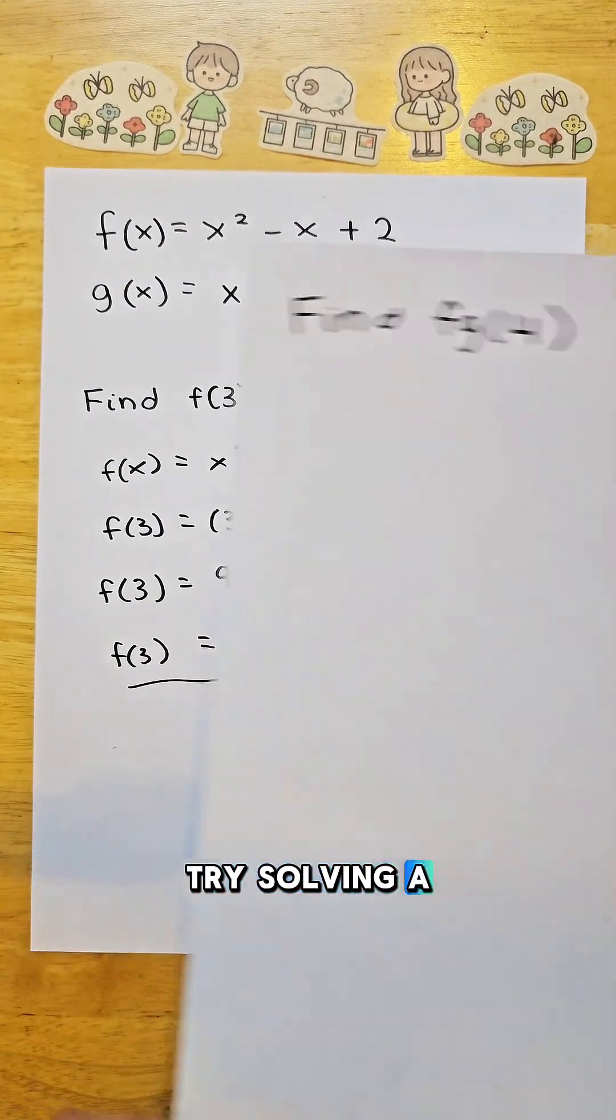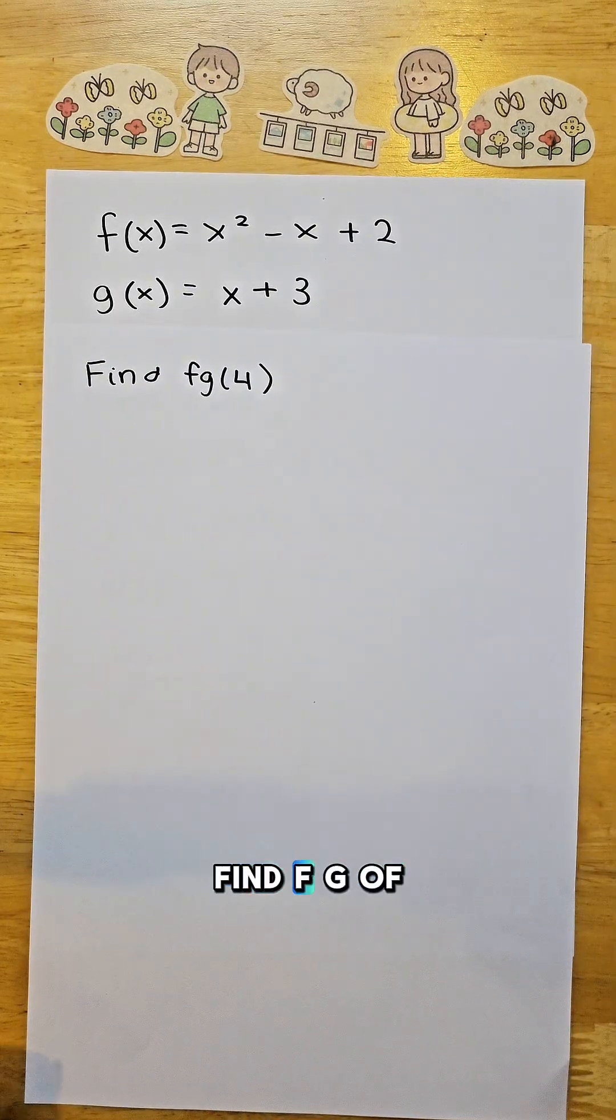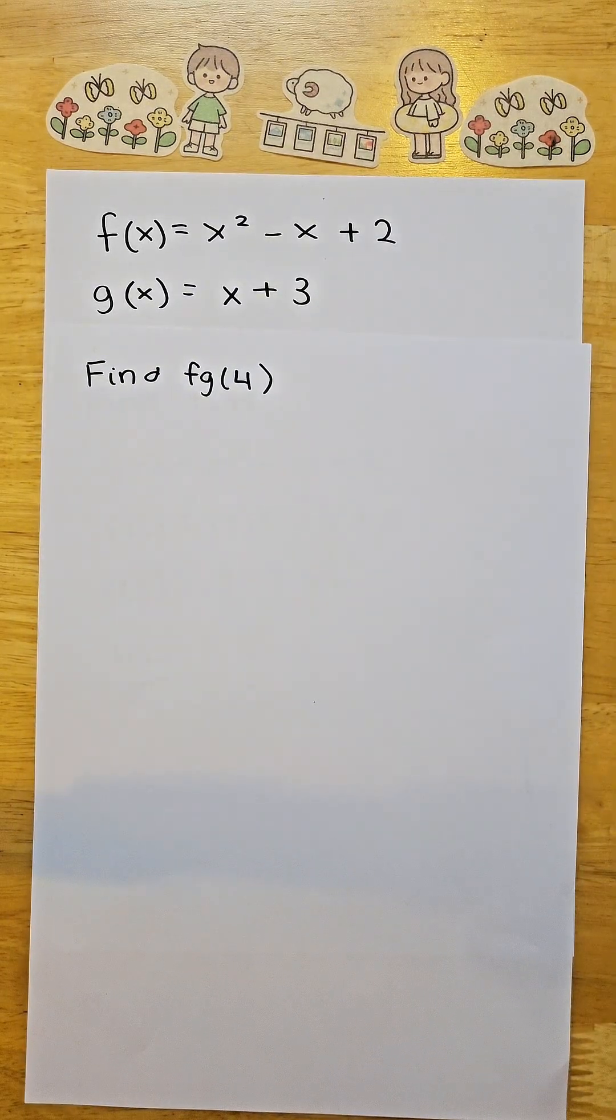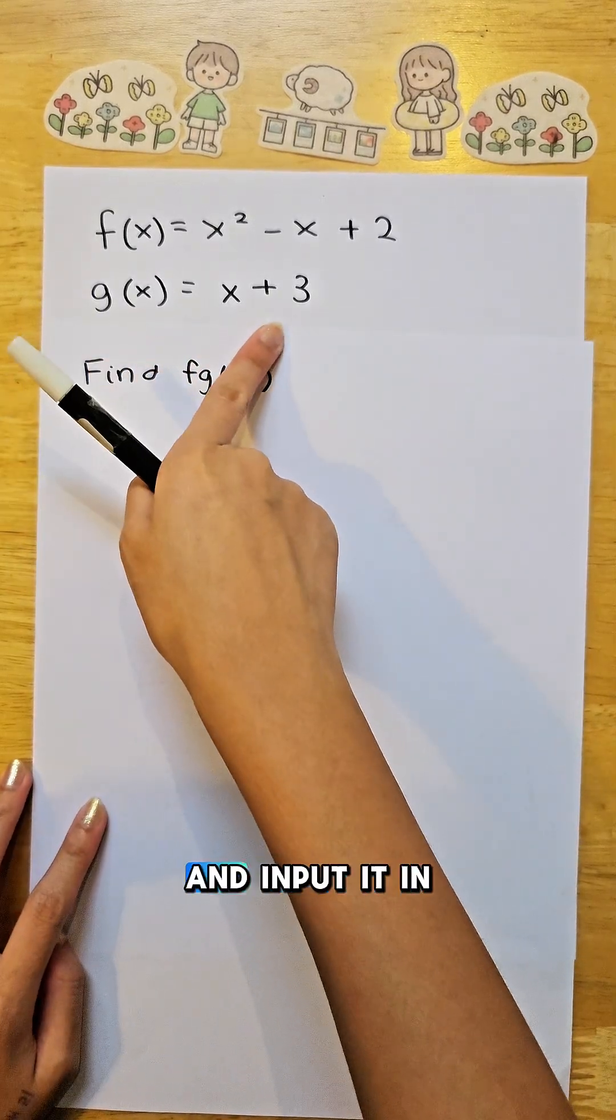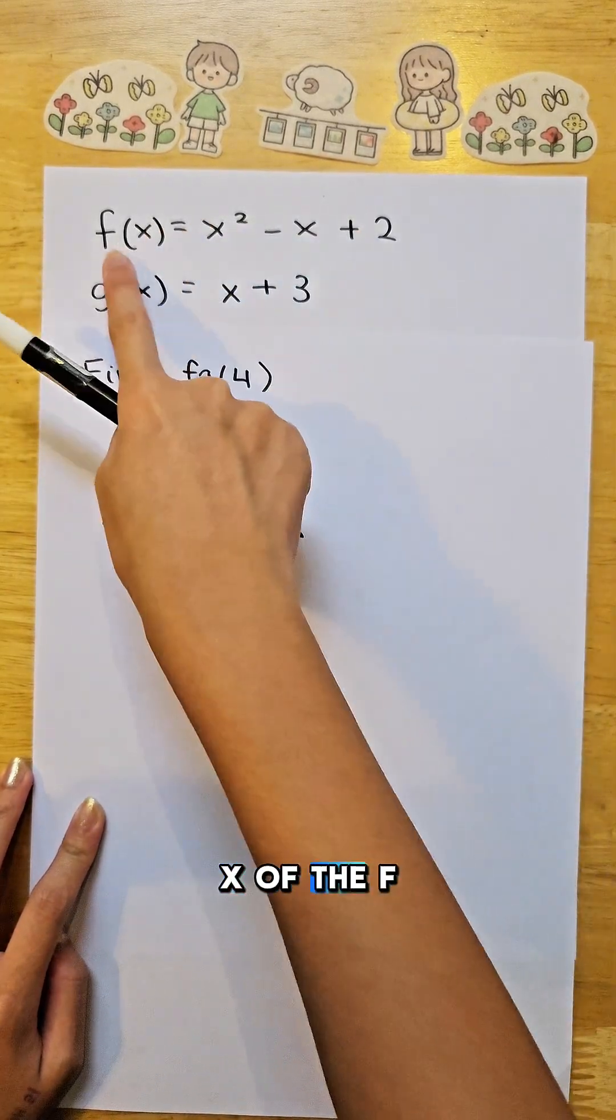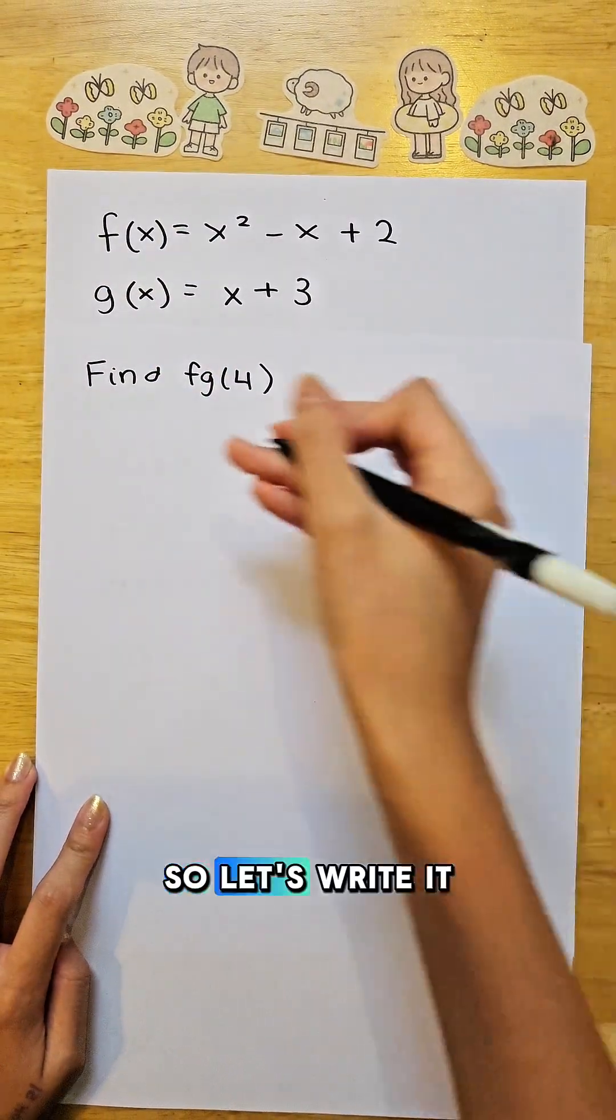Now, let's try solving a harder one. Find fg of 4. Now, since there is g beside f, it means we have to take g of x equation and input it in all the x of the f of x equation. So let's write it down.